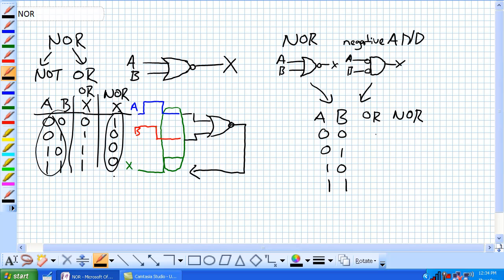Okay, so our NOR, excuse me, our OR was 0, 1, 1, 1. Our negative OR was 1, 0, 0, 0.